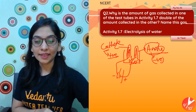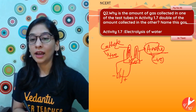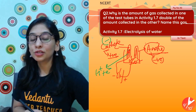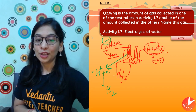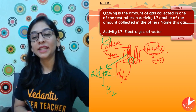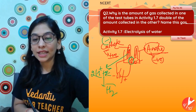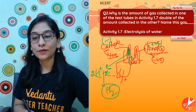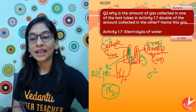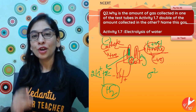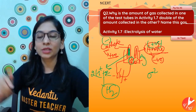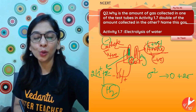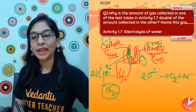H⁺ goes to the cathode. The cathode is the negative terminal — a source of electrons. As H⁺ gains electrons from the cathode, it is stabilized and becomes hydrogen gas (H₂), which collects at the cathode. Every time two H⁺ ions move to the cathode, they gain electrons and form H₂ gas. Meanwhile, the oxide ions (O²⁻) move toward the anode (positive terminal). Each O²⁻ loses 2 electrons; since O₂ is the stable form, 2 oxide ions combine to release O₂ gas and 4 electrons at the anode.